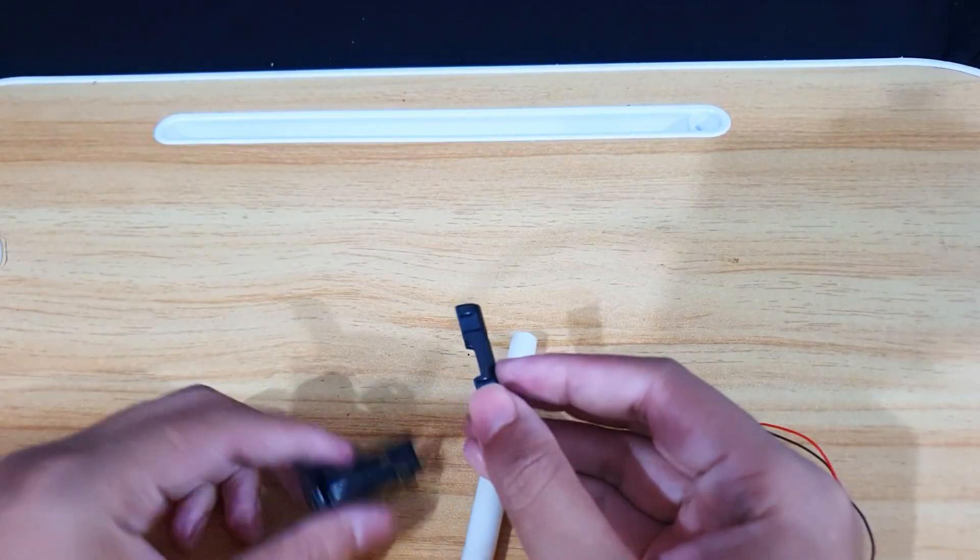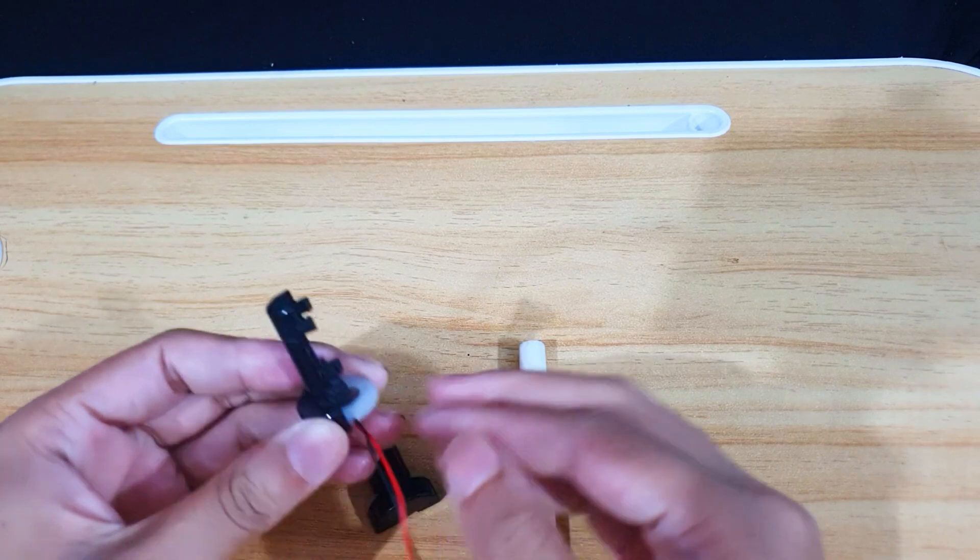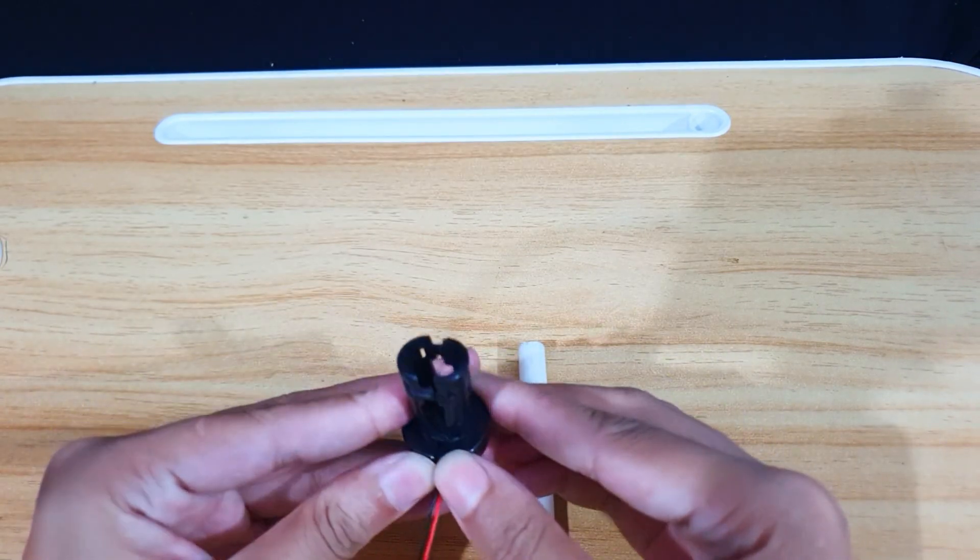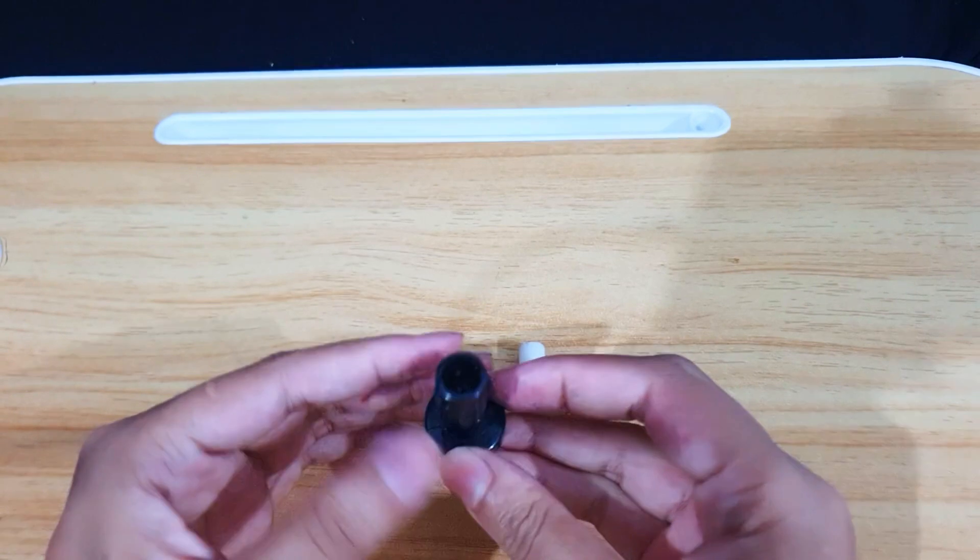Now, I'm going to assemble the stand. First, I need to set the round mist maker into the black stand piece. Watch closely as I do this. You'll want to make sure yours is positioned the same way to avoid putting it in backwards.